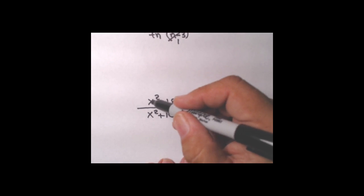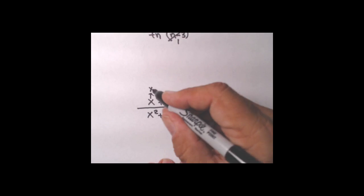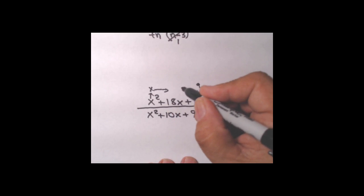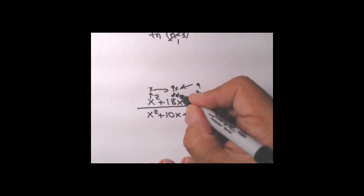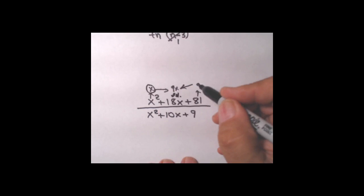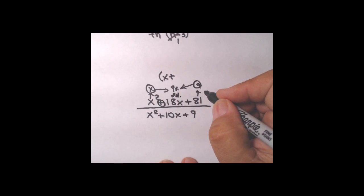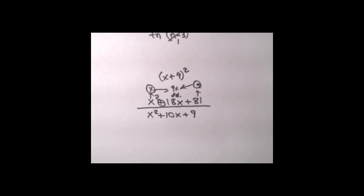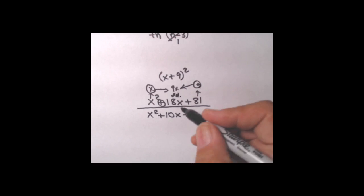One more example. The upstairs might be a perfect square trinomial — let's check. The first term x squared has square root x and the last term 81 has square root 9. To test, multiply those roots: x times 9 is 9x. If the center term is double that — comparing only the coefficients — double 9 is 18, and our center term is 18x. It is doubled, so it definitely is a perfect square trinomial. It factors into the quantity x plus 9, squared — the two roots with the sign of the center term between them.